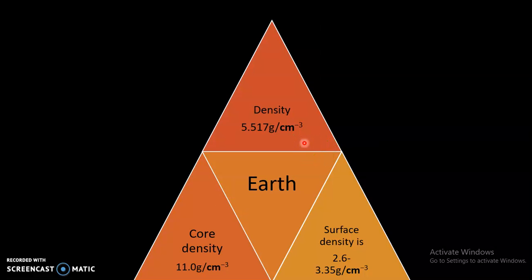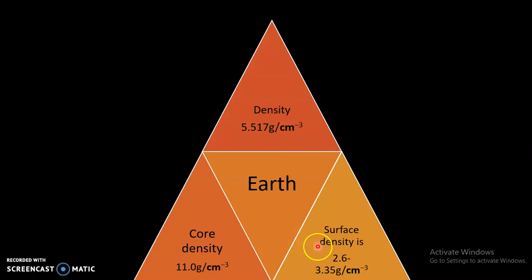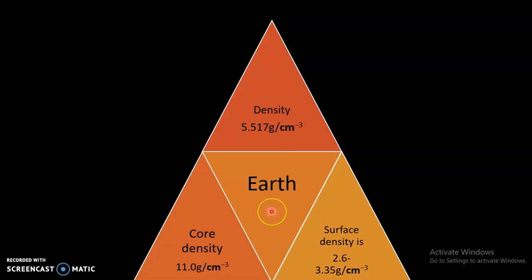Now we are talking about the density of the Earth. Before going to the layers, we have to discuss the density of the Earth. On the basis of chemical composition of the rock and different varieties of rock, the Earth contains distinct density. The average density of the Earth is 5.517 gram per cubic centimeter. The average density of the Earth's surface is 2.6 to 3.35 gram per cubic centimeter. And the average density of the core is 11.0 gram per cubic centimeter.